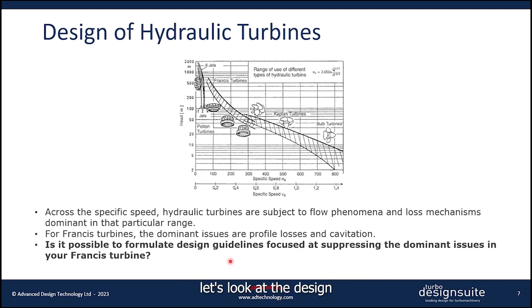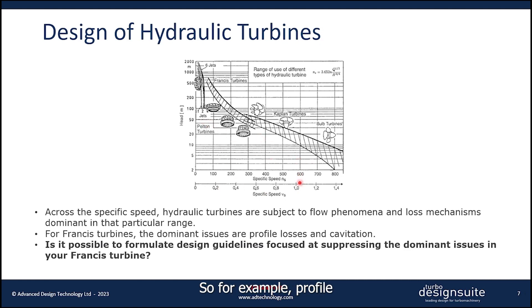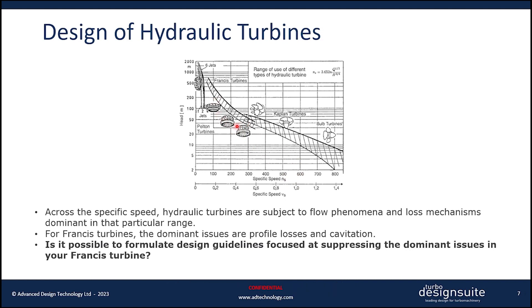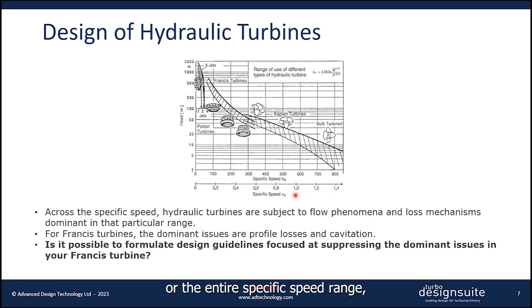Now let's look at the design of hydraulic turbines in a bit more detail. Across the specific speed range, hydraulic turbines are subject to various flow phenomena and loss mechanisms that are dominant in that particular range. For example, profile losses usually take priority when it comes to Francis turbines, which is the topic of this project.